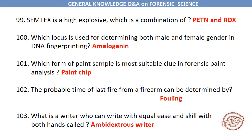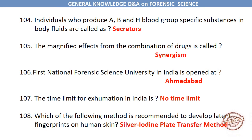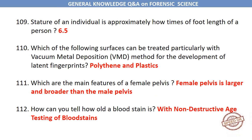What is a writer who can write with equal ease and skill with both hands called? An ambidextrous writer. Individuals who produce A, B and H blood group-specific substances in body fluids are called secretors. The magnified effects from the combination of drugs is called synergism. The first National Forensic Science University in India is opened at Ahmedabad. The time limit for exhumation in India is no time limit. Which method is recommended to develop latent fingerprints on human skin? Silver iodine plate transfer method. Stature of an individual is approximately 6.5 times the foot length.